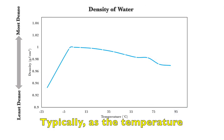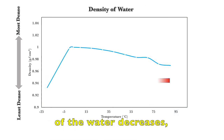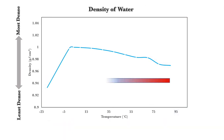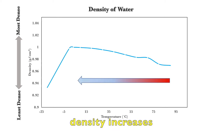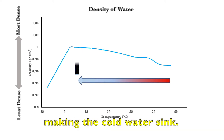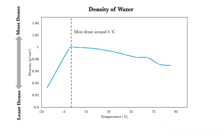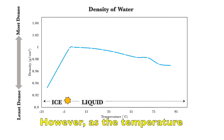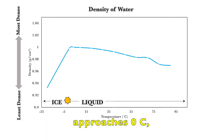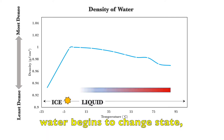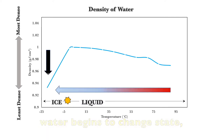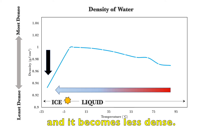Typically, as the temperature of the water decreases, density increases, making the cold water sink. However, as the temperature approaches zero degrees Celsius, water begins to change state and it becomes less dense.